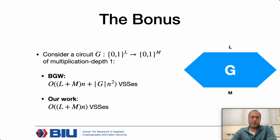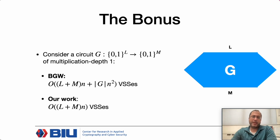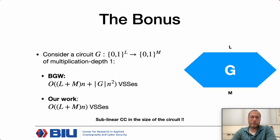This generalizes to circuits with multiplication depth greater than 1, where we only need to pay for the wires between layers and are independent of the number of multiplications in each layer. This means the communication complexity is sub-linear in the circuit size. This is similar to R1CS in zero knowledge, and to the best of our knowledge this is the first time this appears in the perfect setting.